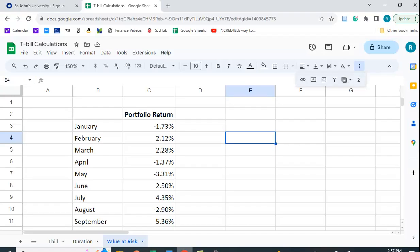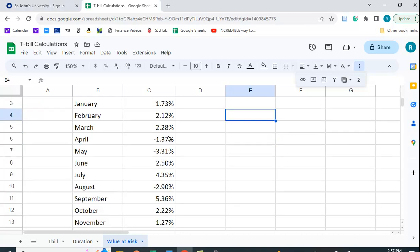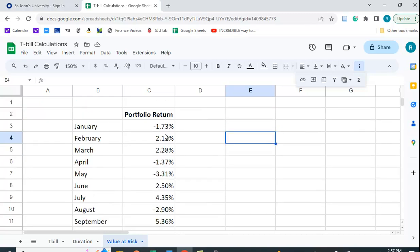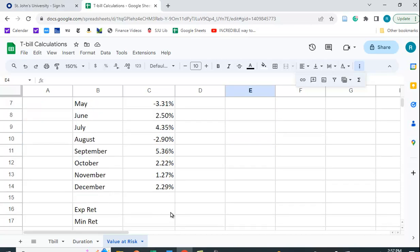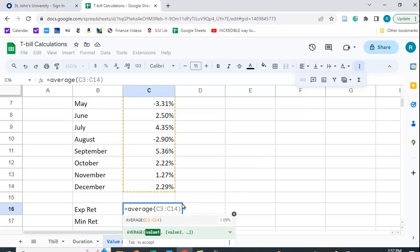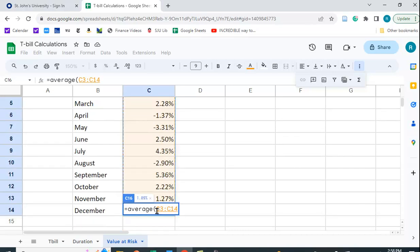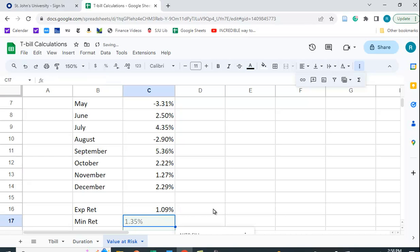Let's take a look in Google Sheets at an example. Suppose we have some portfolio returns for 12 months. Some periods are good, some periods are bad. Let's take a look. What's the expected return? We can just average this.